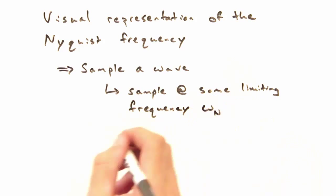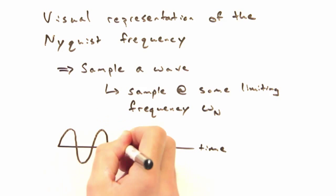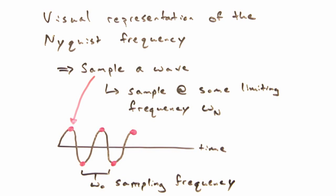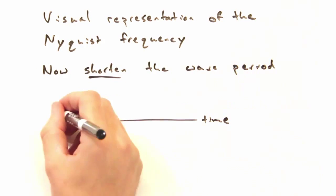Think about electronically sampling a wave. At some period, you're only going to be able to sample peaks and troughs. What happens as that period gets even shorter?